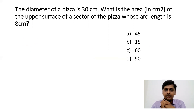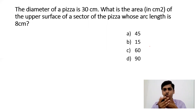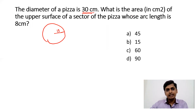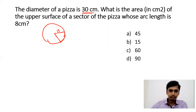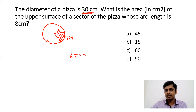Question eight: the diameter of a pizza is 30 cm, so radius = 15 cm. What is the area of the sector of the upper surface whose arc length is 8 cm? We use a shortcut: when the full circumference is 2πr, the full area is πr². So when the circumference is 2π×15, the total area is π×15².